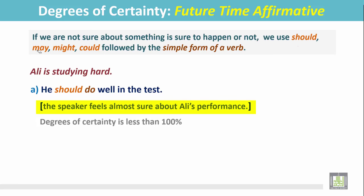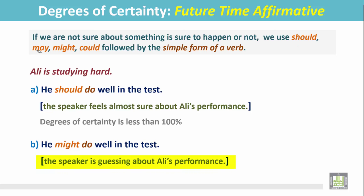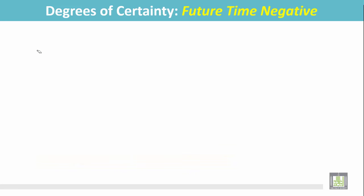Another example: he might do well in the test. In this case, the speaker is guessing about Ali's performance, and the degree of certainty again is less than 100 percent.